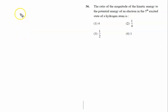The ratio of the magnitude of the kinetic energy to the potential energy of an electron in the fifth excited state. Fifth excited state means n equals six.